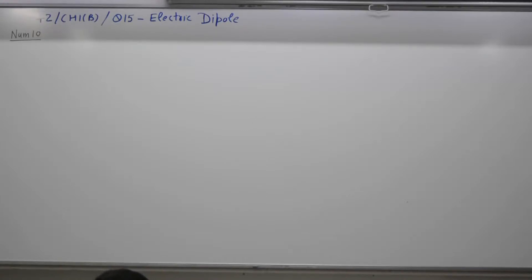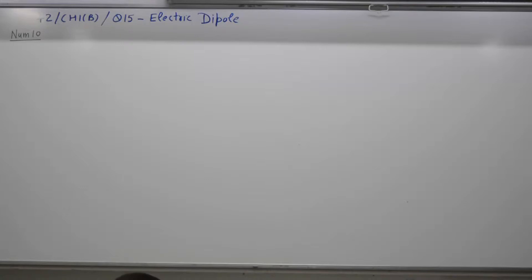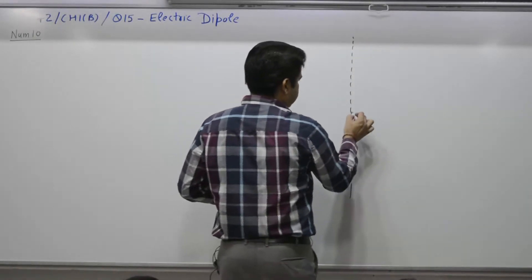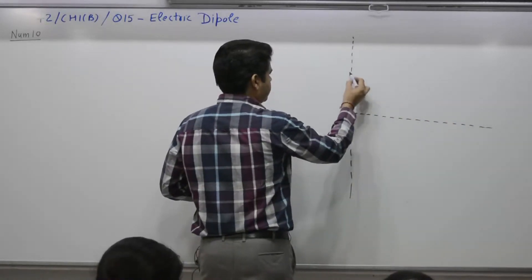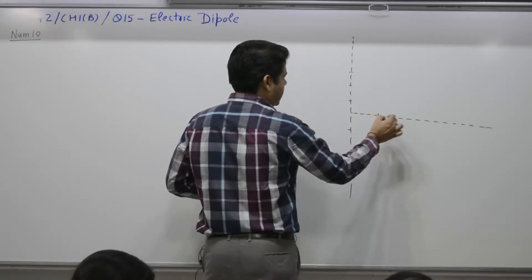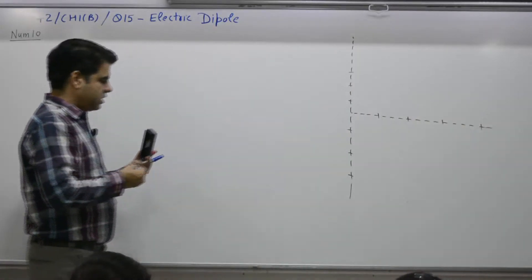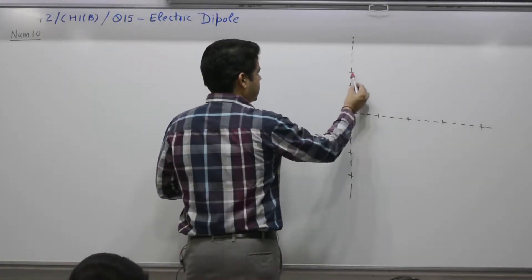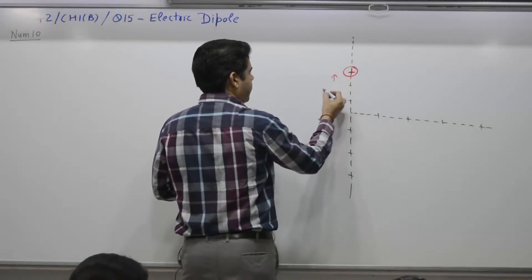Numerical problem 10: Charge Q1 = +6 nanocoulombs is on the y-axis at y = +3 cm. Charge Q2 = −6 nanocoulombs is on the y-axis at y = −3 cm. Calculate the force on a test charge Q₀ = 2 nanocoulombs placed on the x-axis at x = 4 cm. First, draw a diagram with the y-axis marked at ±1, ±2, ±3 cm, and the x-axis marked at 1, 2, 3, 4 cm. The positive charge Q1 is at +3 cm and the negative charge Q2 is at −3 cm.